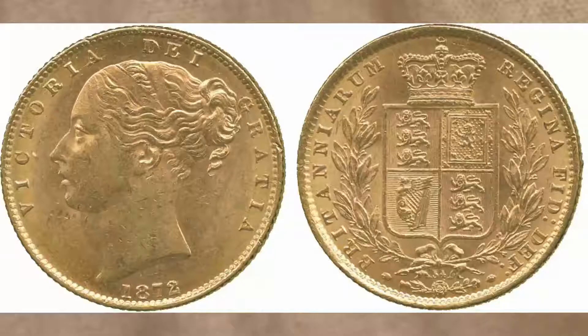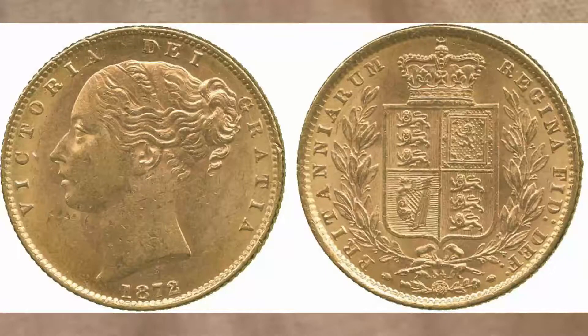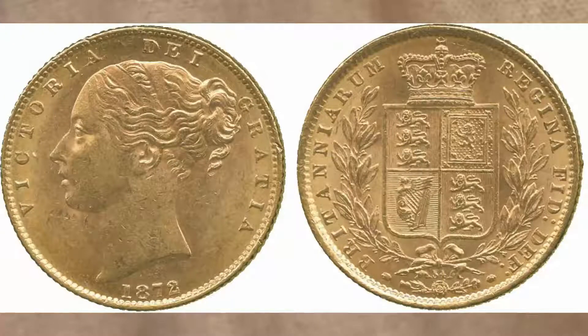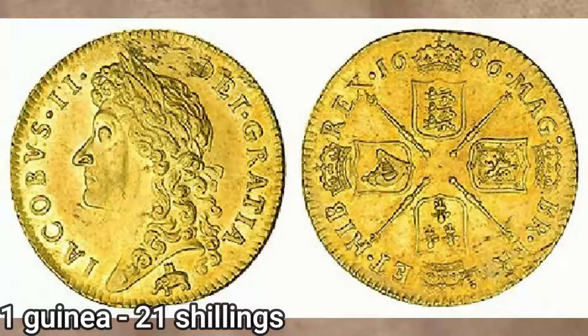A sovereign — I'm going to show an image of this. Basically five crowns went into one sovereign, or twenty shillings. There was also a guinea, where twenty-one shillings went into one guinea.